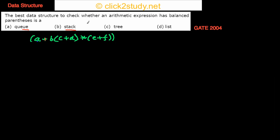The next problem: the best data structure to check whether an arithmetic expression has balanced parentheses. An arithmetic expression has parentheses, and balanced means that whenever you have an opening parenthesis, there must be a closing parenthesis — those are balanced parentheses.